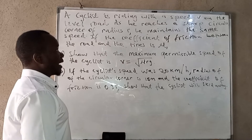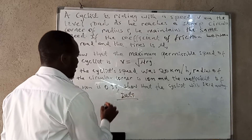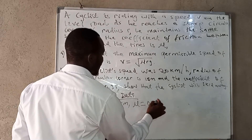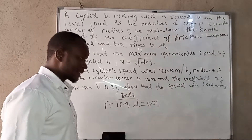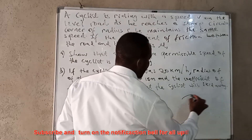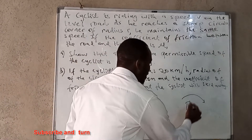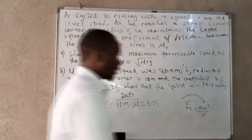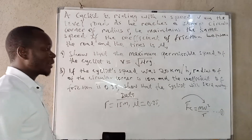As he is negotiating the corner, we have the radius which is 15 meters, and mu equals 0.35. We have two forces acting. As he negotiates a circular corner, there is the centripetal force which is given by mv squared over r. We can call this equation number one.